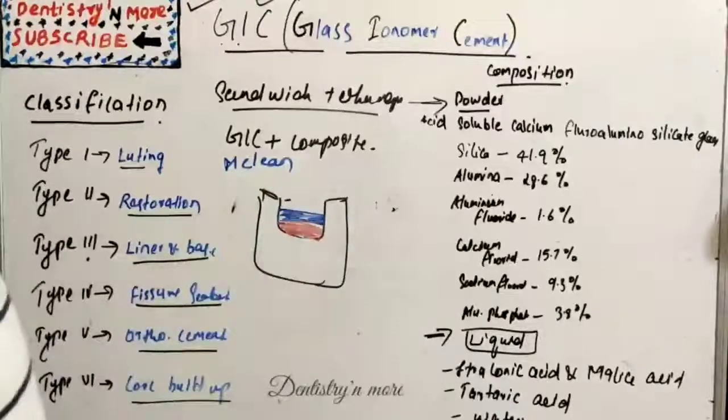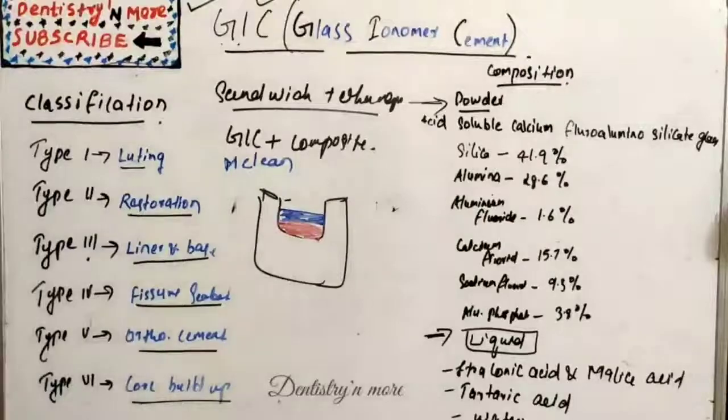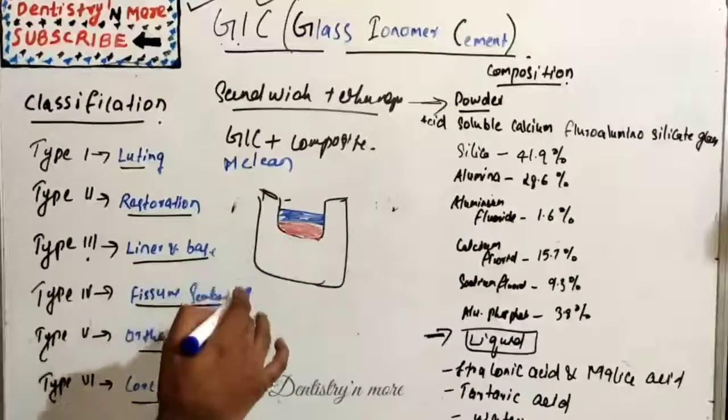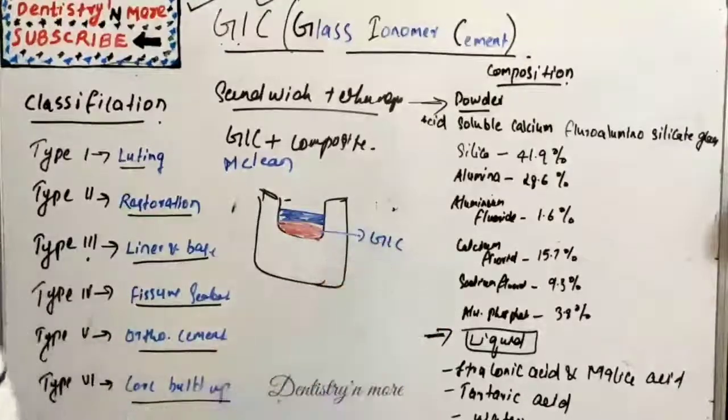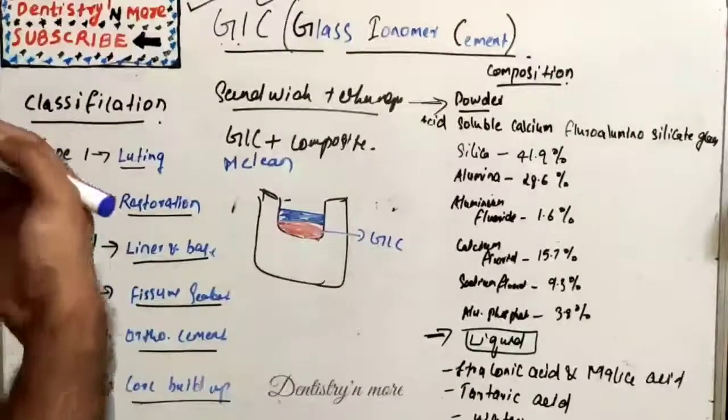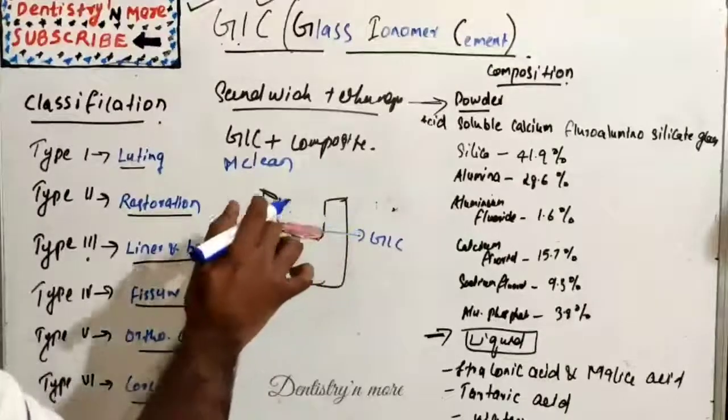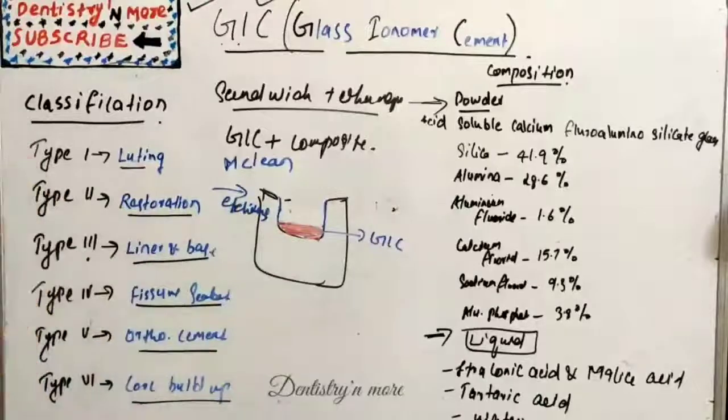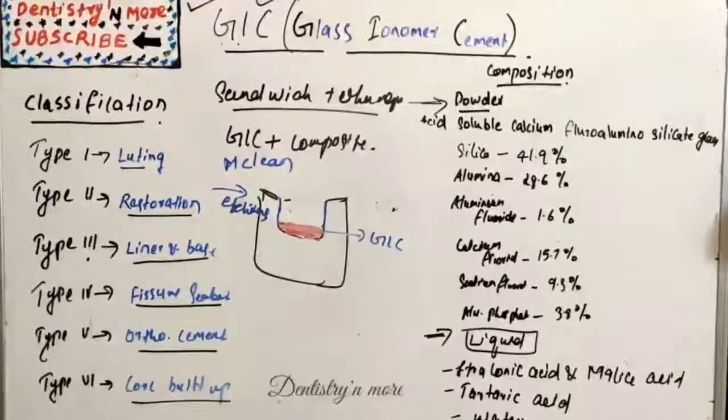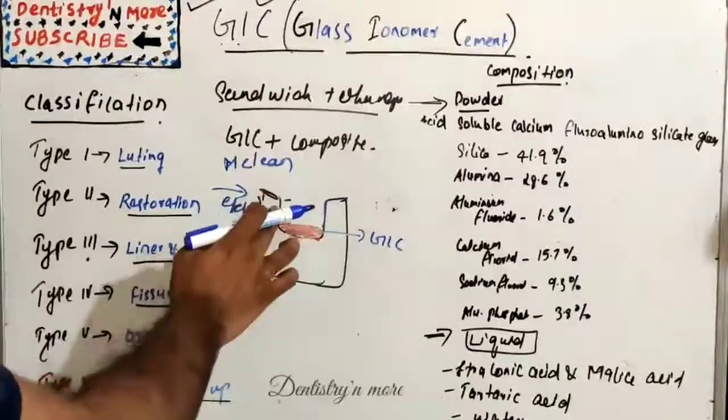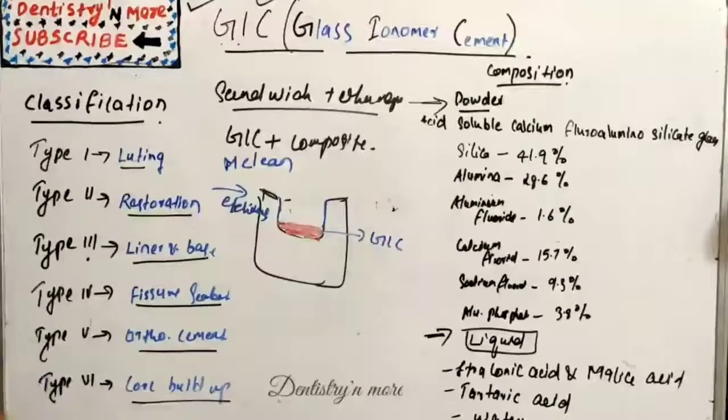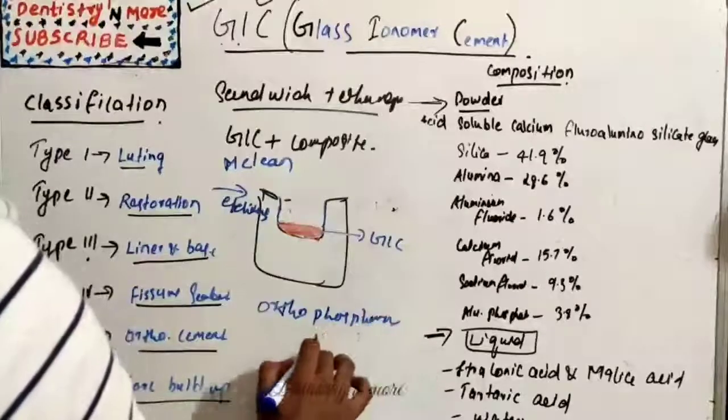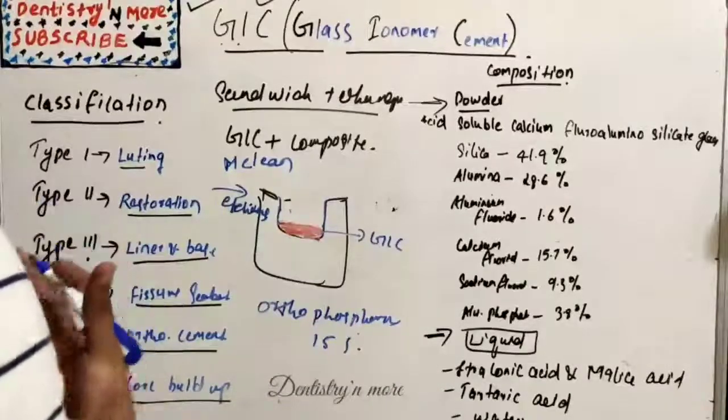It is developed by McLean. It combines the beneficial properties of GIC and composite. After cavity preparation, condition the cavity to develop good hydration with GIC, then place Type 3 GIC into the prepared cavity. After setting, etch the enamel and GIC. We need to etch both the enamel and GIC. We are going to do etching because composite needs etching and bonding agent. It is not like direct bonding. So we need to etch the cavity and GIC using orthophosphoric acid. We etch the cavity for 15 seconds. This will improve micromechanical bond to composite resin.